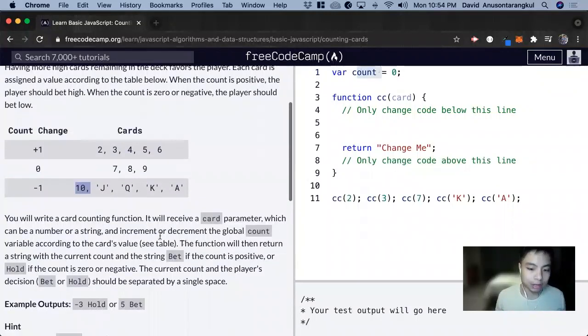And then if the count is a positive number, we return the count and then bet. If it's a negative or zero, we want to return the count and hold.